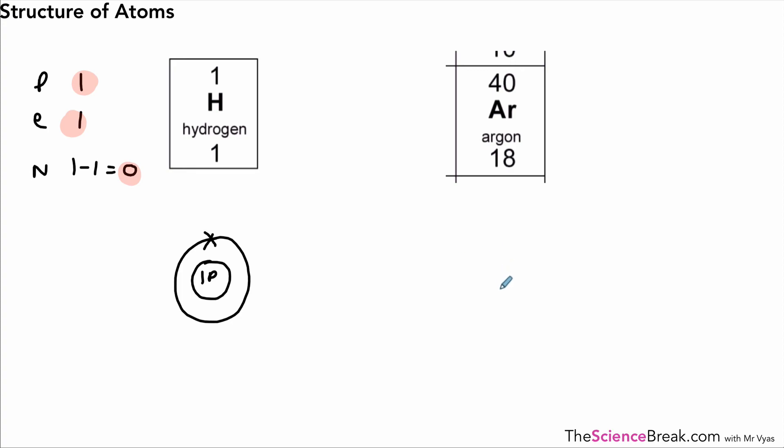For argon, that's a slightly bigger atom, so we fill in our details as before: 18 protons, 18 electrons, and 22 neutrons, which is 40 minus 18. So we draw our nucleus first—looks like we're going to need three shells, so we can draw the three shells in.